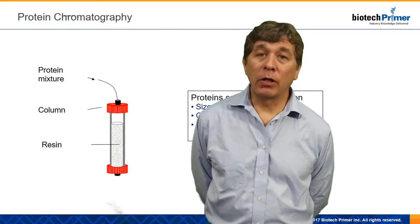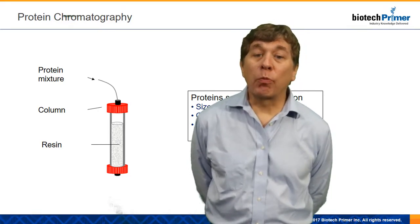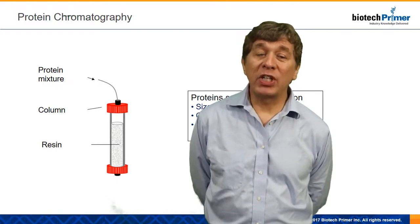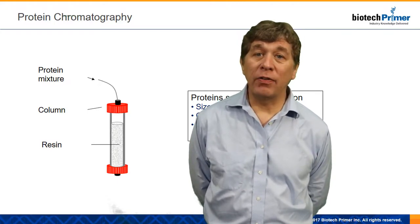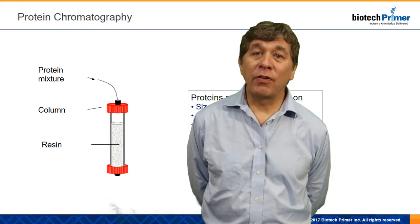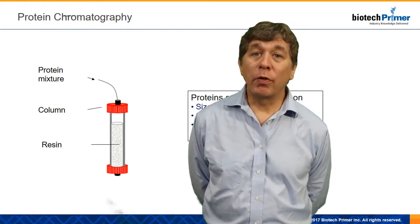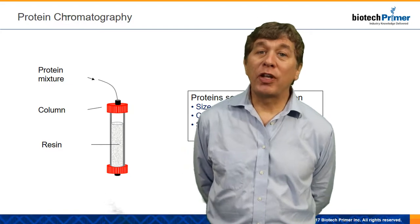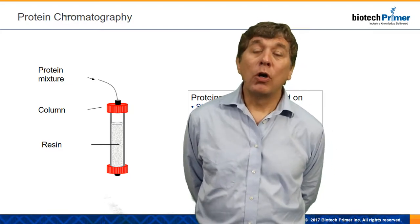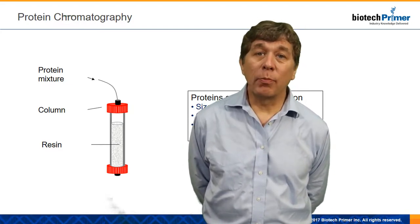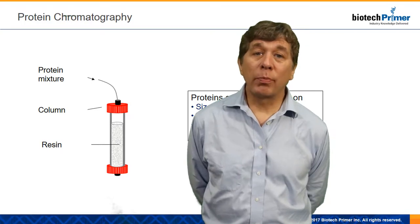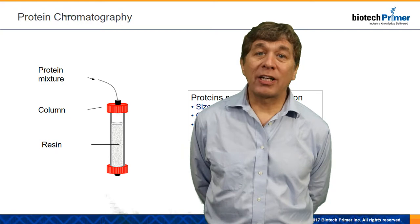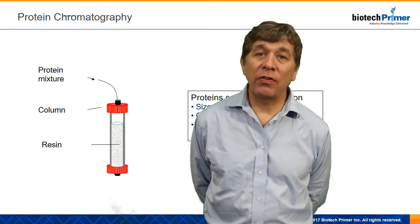The chromatography system is made of a chromatography column which contains what's called the stationary phase. The stationary phase, as the name implies, doesn't move. Some proteins will stick to the stationary phase. Then we have the second part of the chromatography system which is called the mobile phase. The mobile phase then moves the proteins over the stationary phase, and some proteins will selectively attach to the stationary phase and others will not. In this way, a separation is achieved.